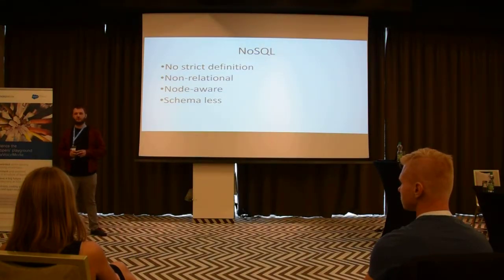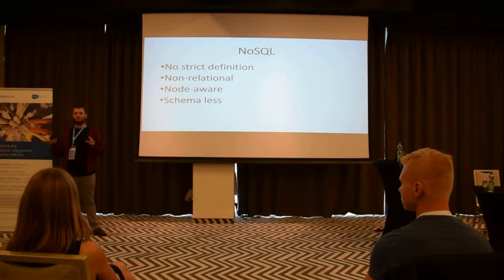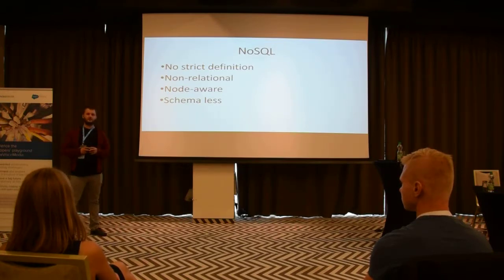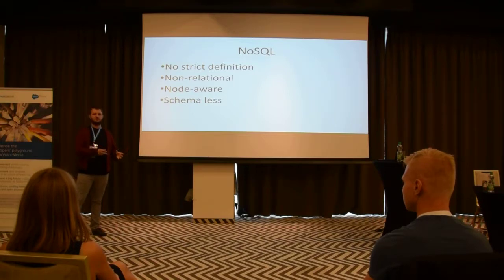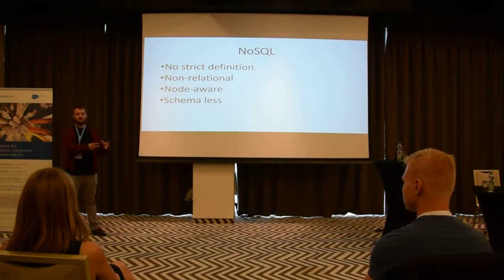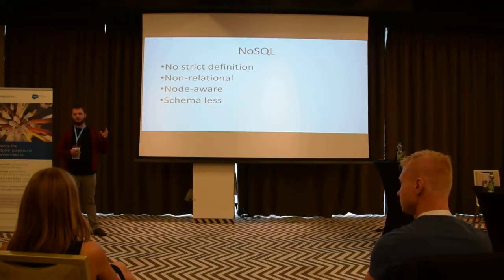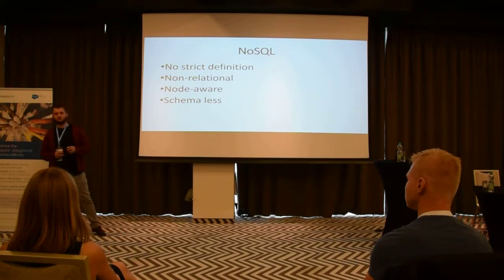The second important characteristic of NoSQL databases is that they are cluster-aware — they are designed from scratch to work across multiple machines and to be easily scalable. The third very important characteristic is that in most situations NoSQL databases are schema-less, which means that when we are putting something into a NoSQL database, it doesn't have to have a consistent structure. This is different from relational databases where everything in one table must always have the same columns — you cannot add additional columns to just one row; you need to add columns to all rows.